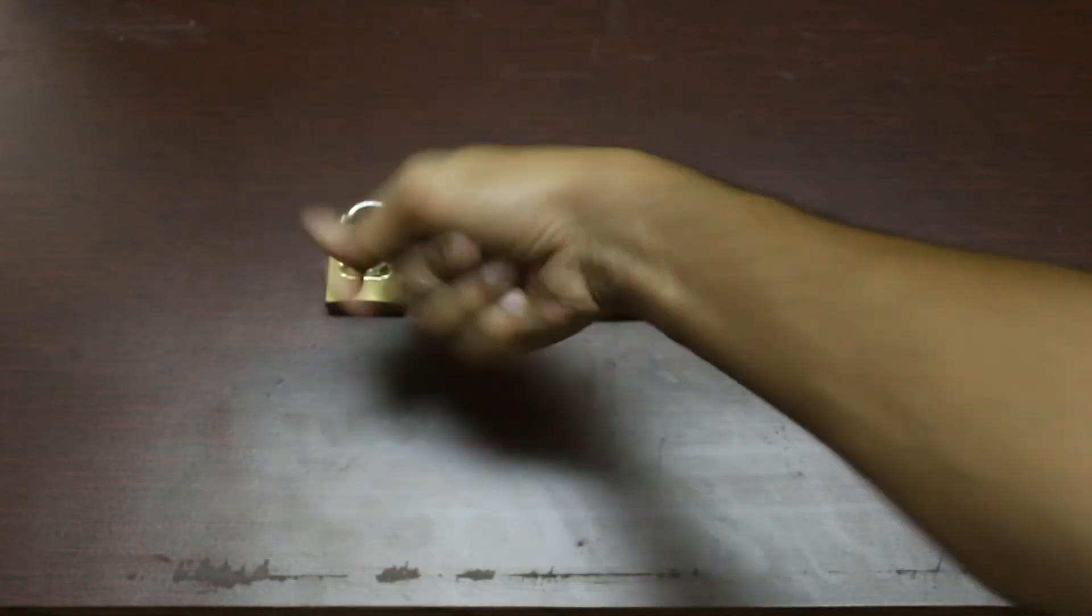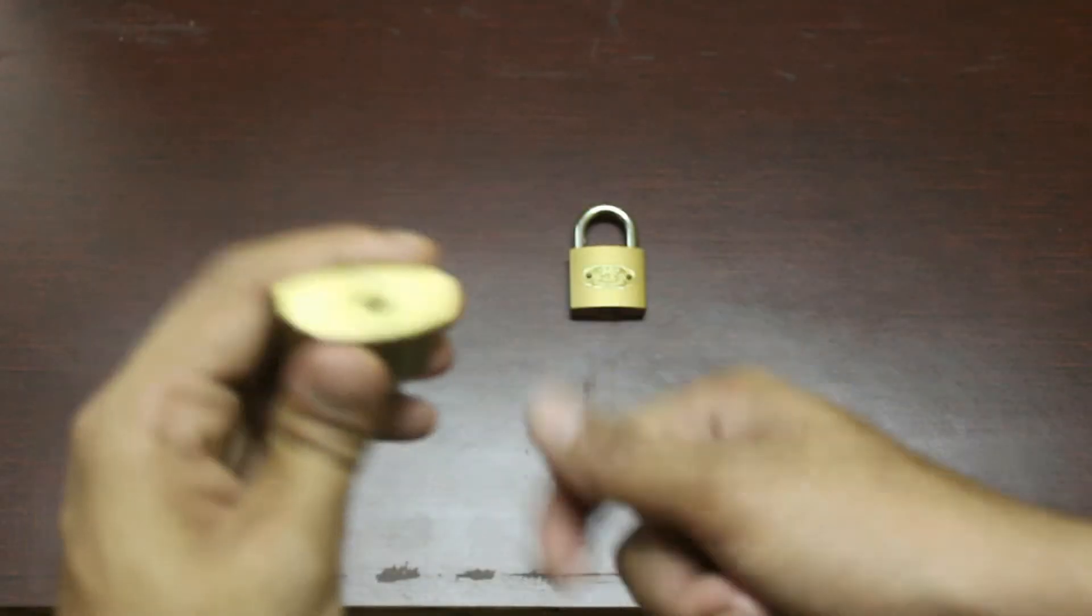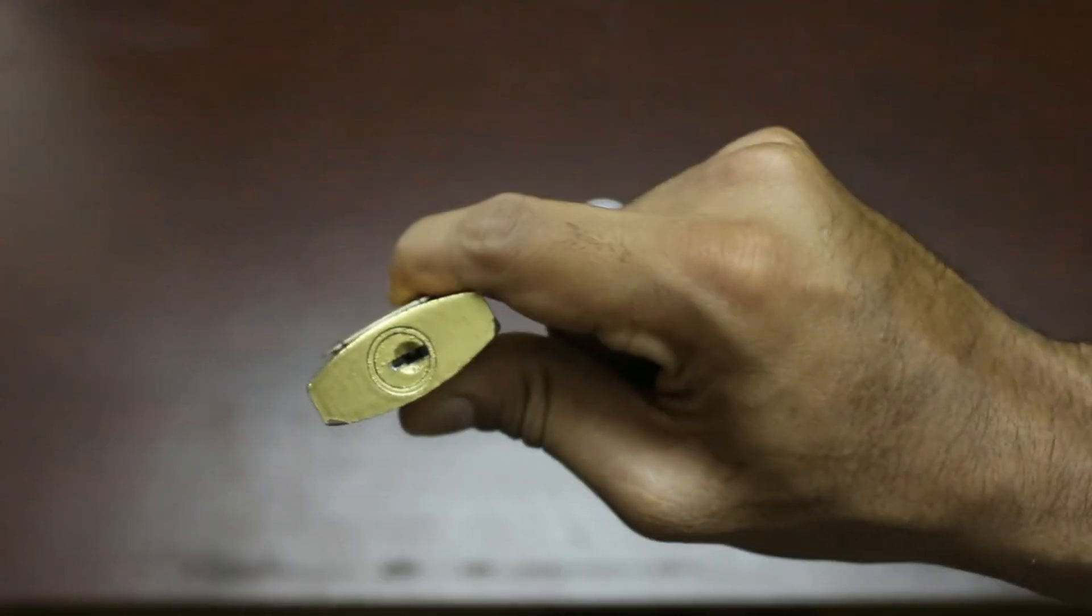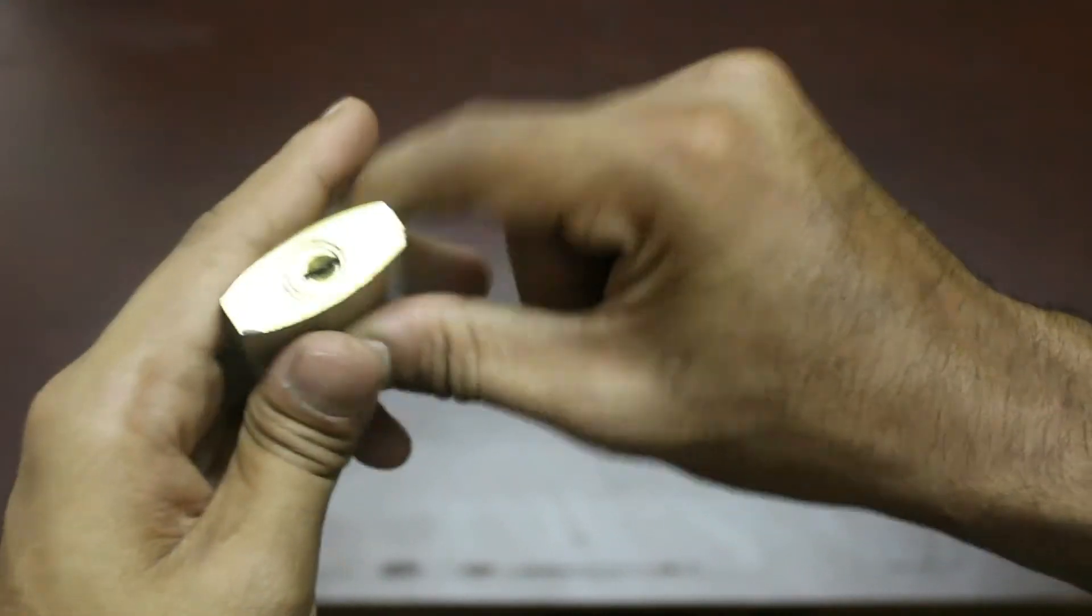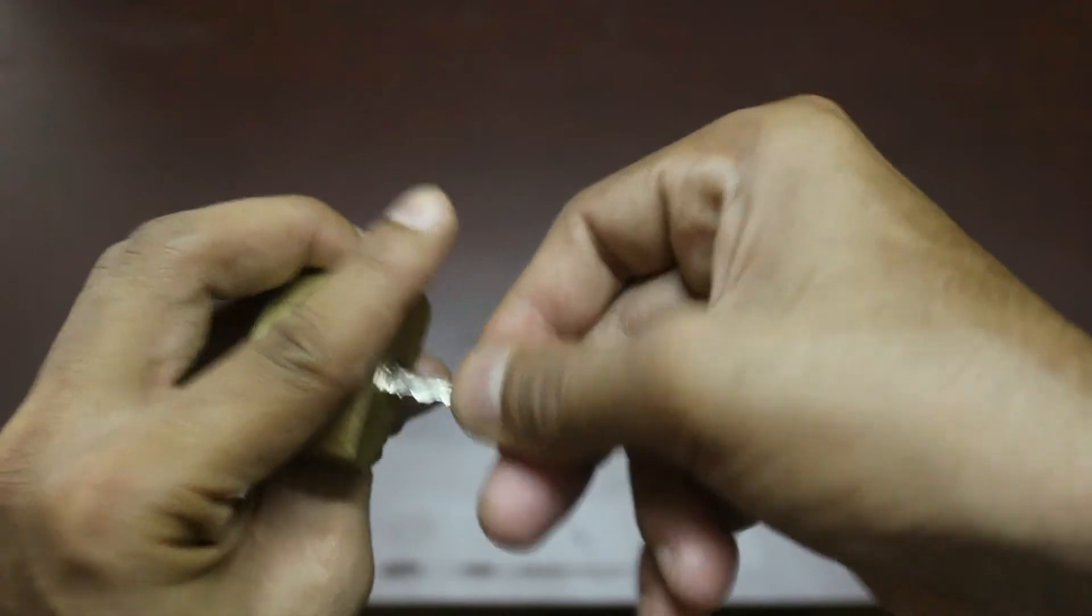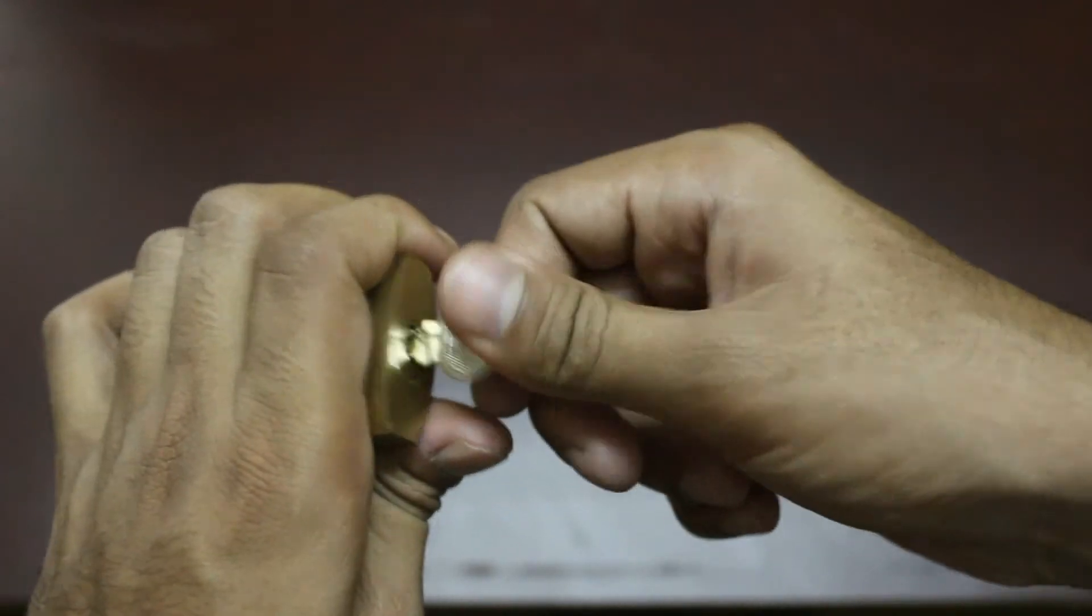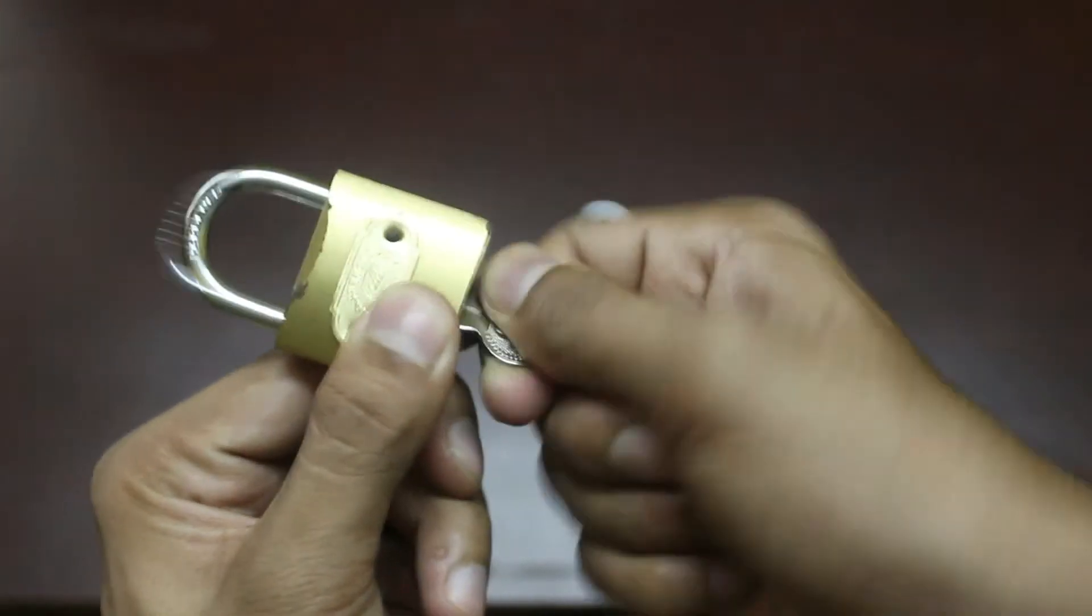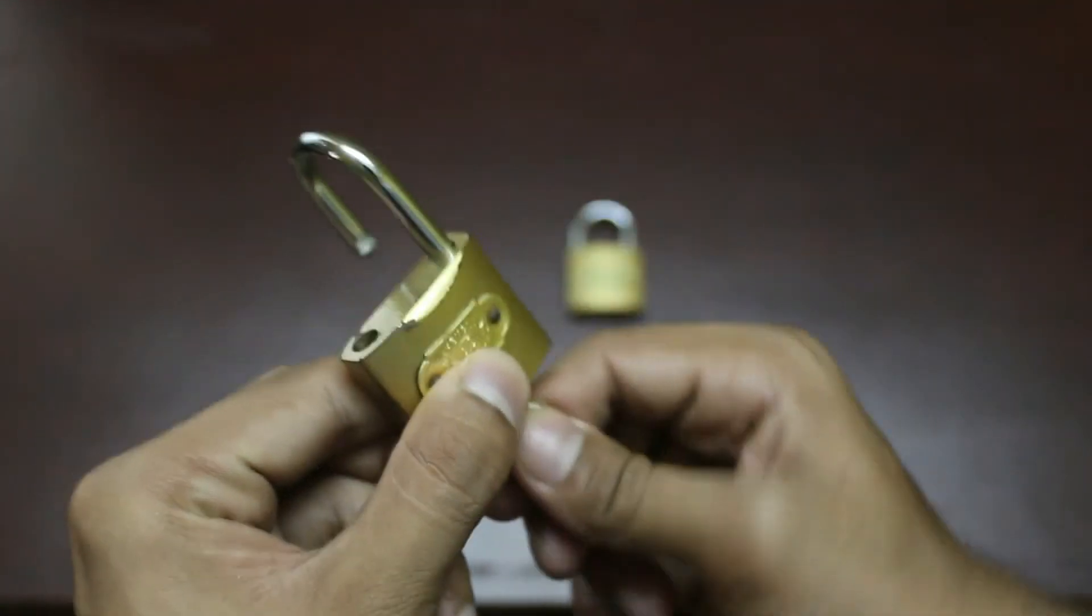So there is the key. Let's open lock number one. There is the key hole. It is inside. It is open.